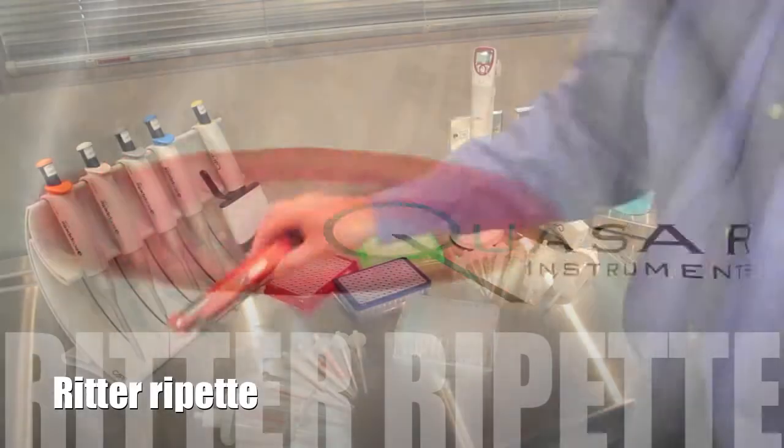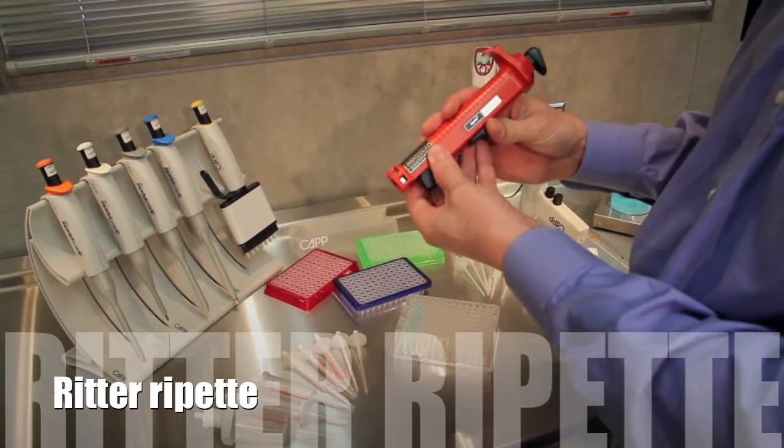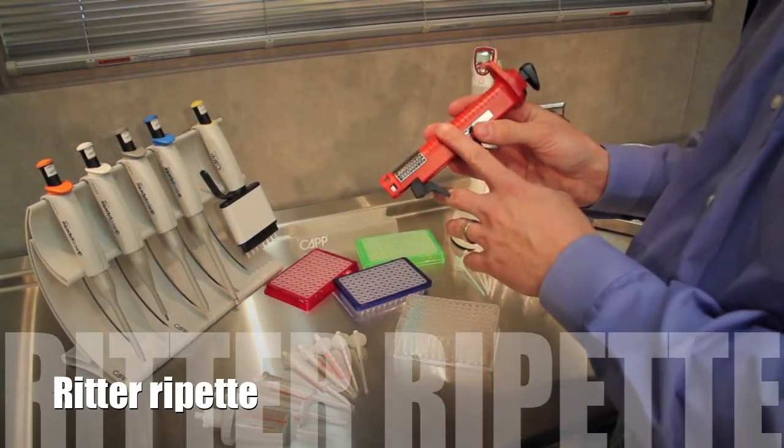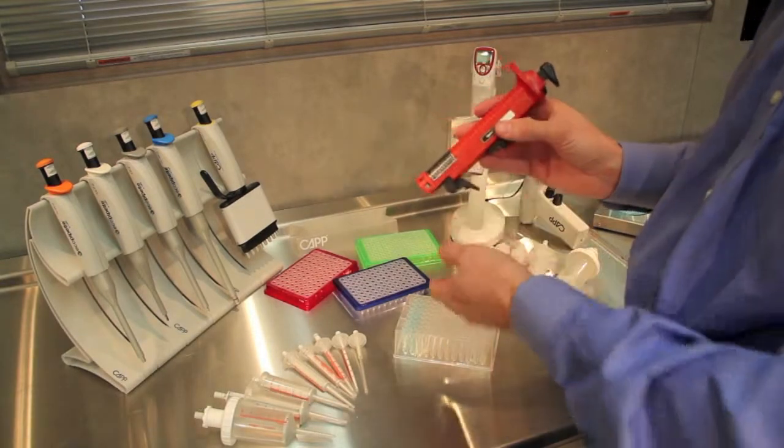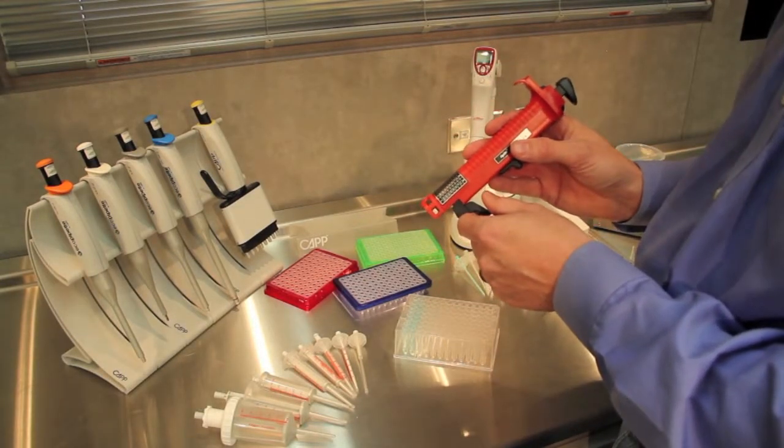The next option we're going to look at is the Ritter Mechanical Repeater. Now this is a great device if you want to essentially do what we're doing, which is fill up many wells with the same liquid and you need the accuracy of a pipette.